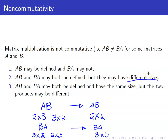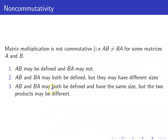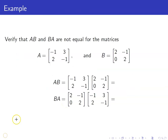And lastly, AB and BA may both be defined and have the same size, but the two products may still be different. We are going to see an example of this in the next slide. Let us verify that AB and BA are not equal for these two matrices. First, let us compute the product AB.